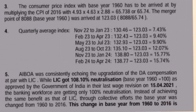That product equals 65.738, or 65.74. The merger point of 8088 with base year 1960 was arrived at as 123.03, that is 8088 divided by 65.74.